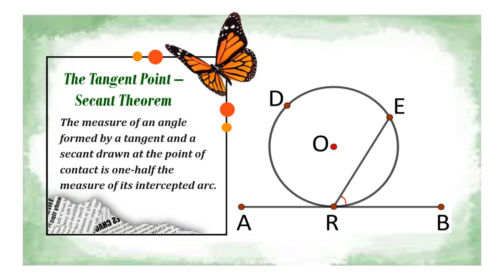For example, to find the measure of angle ERB, you simply get half the measure of its intercepted arc ER. If arc ER is 170 degrees, then the measure of angle ERB is one-half of 170, which is 85 degrees.